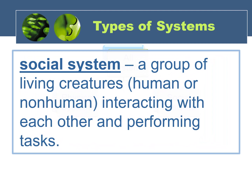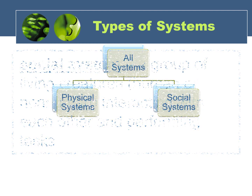A social system, on the other hand, involves a group of living creatures. These can be human or non-human, but what's important is that these living creatures are interacting with each other and performing tasks. I have to make it clear — I'm not saying that social systems don't have physical components. They can and they often do, but the key feature of such a system is that it is made up of living creatures that have relationships and interact with each other.